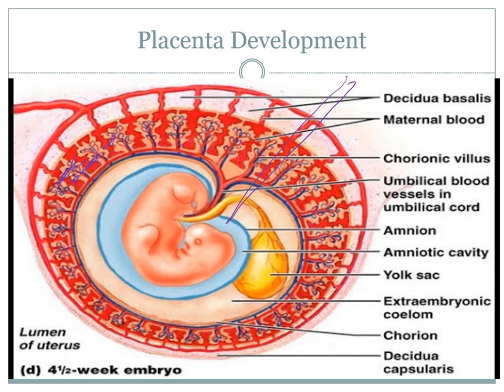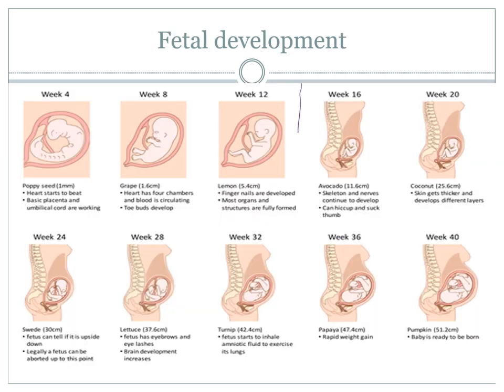Once the placenta is formed, the baby starts to grow and we divide development into weeks and trimesters. The first trimester runs from start up to 13 weeks. Around week 3 to week 4 the heart itself begins to beat, though it's quite immature beating at this stage and the baby is still getting its nutrients from the yolk sac. Once connected to the placenta we'll see more development from there.